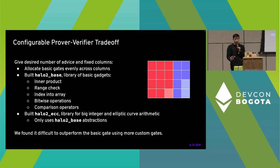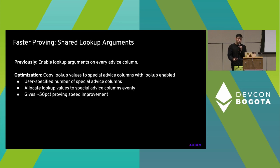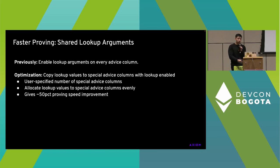One thing to note is we found it's actually very difficult to outperform using this very simple gate, even with fancier custom gates. We tried a number of things we thought were clever that did not improve the proving speed. Finally, one very critical optimization: we previously enabled lookup arguments on every single column, which was crucial for range checks. We optimized this by having special columns whose only purpose is to hold cells that are looked up, and we copy all cells we want to look up to those columns. Although this sounds trivial, it actually reduces the proving time by about 50%. We can configure how many of these special lookup columns we need depending on the circuit.